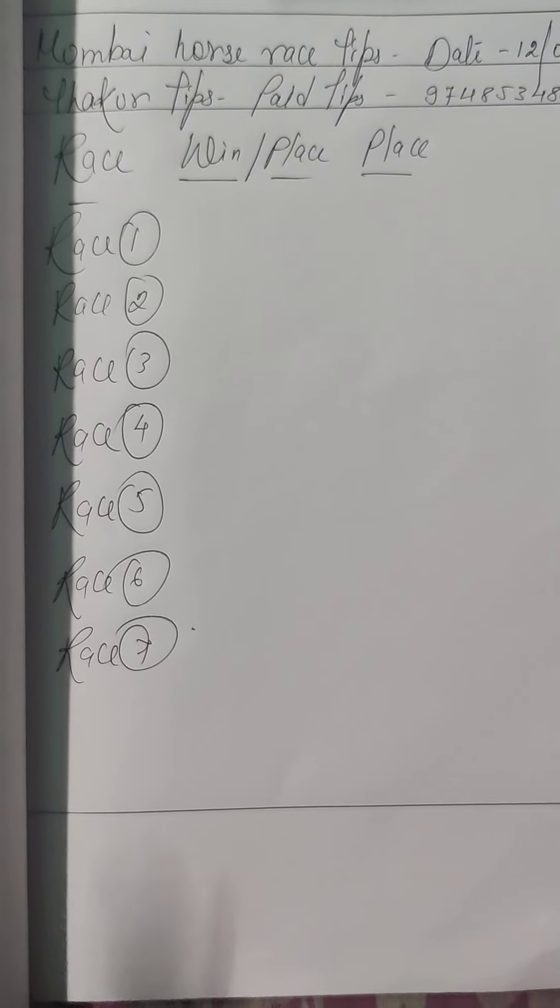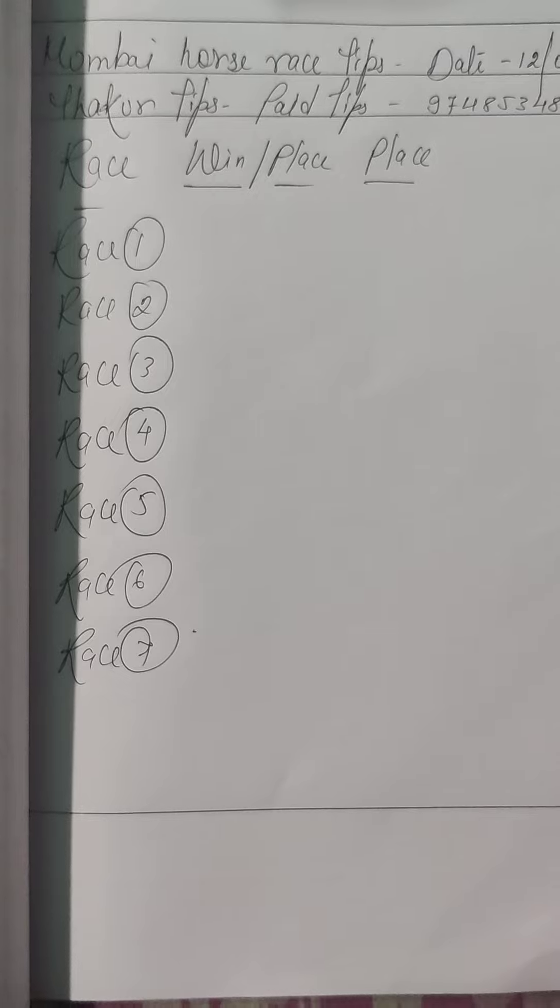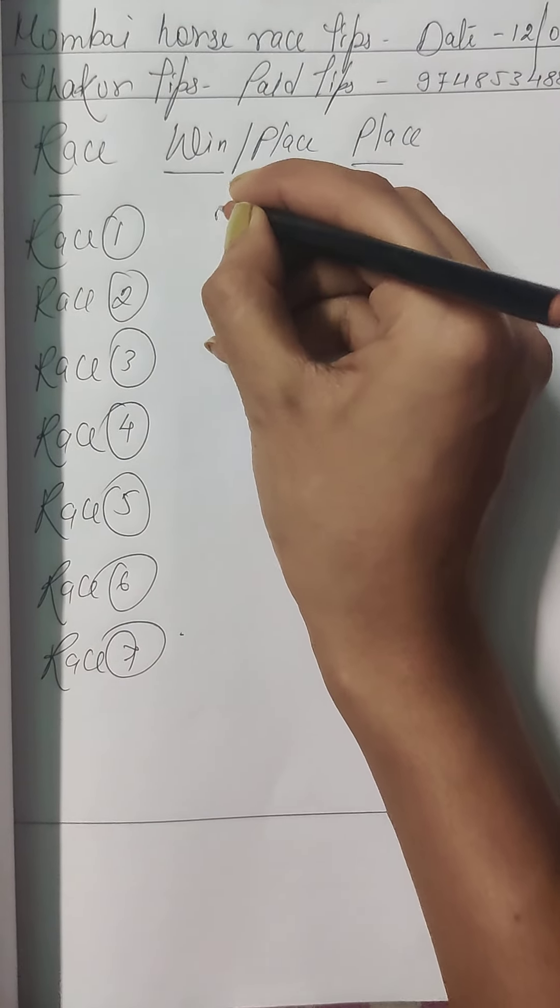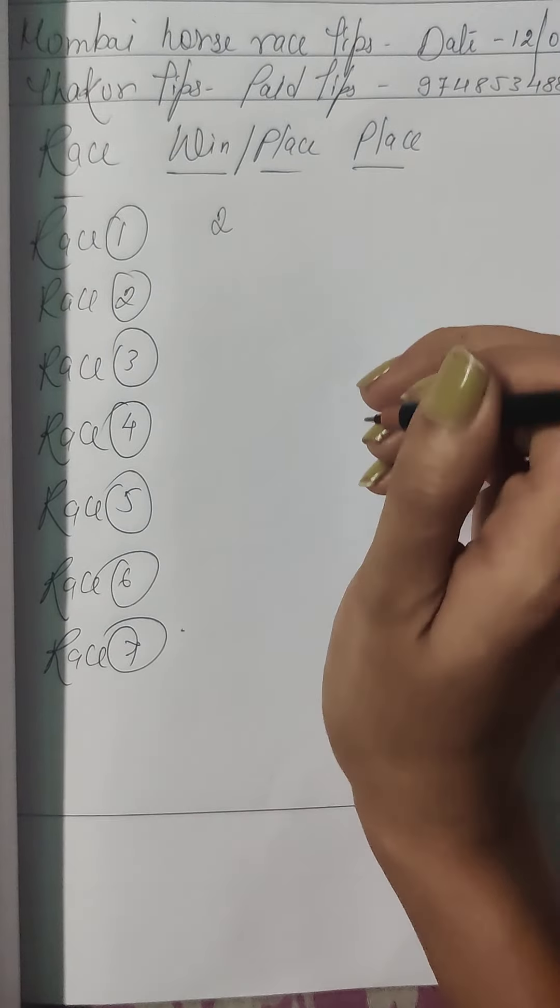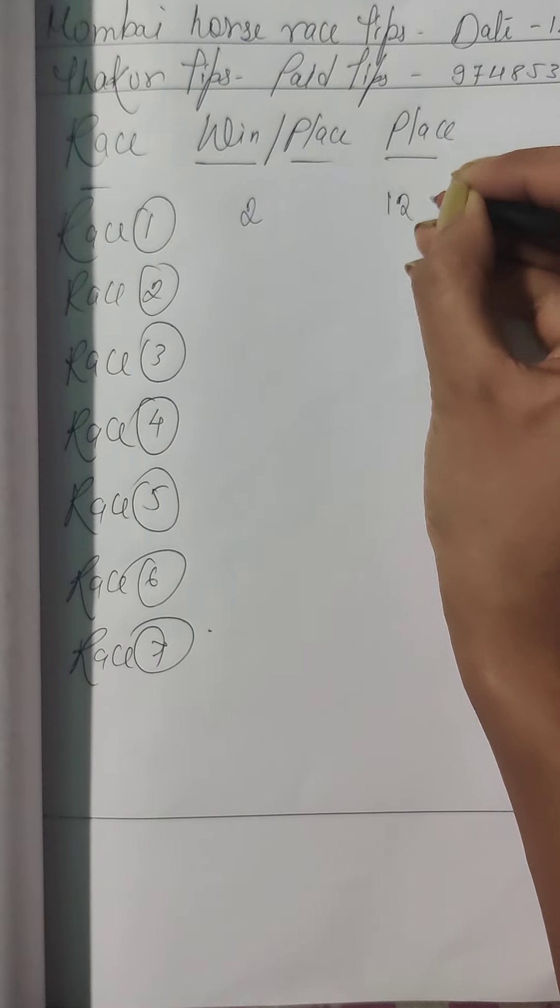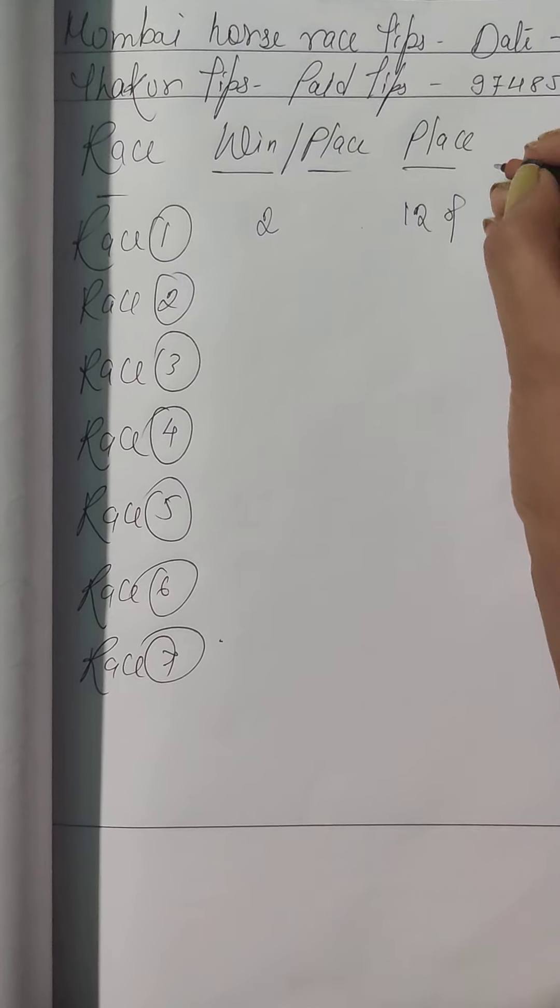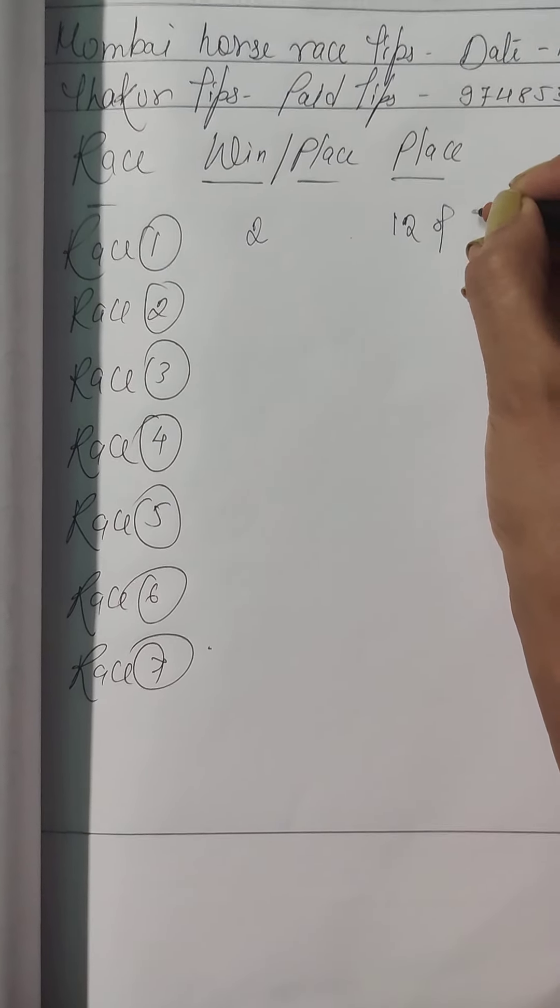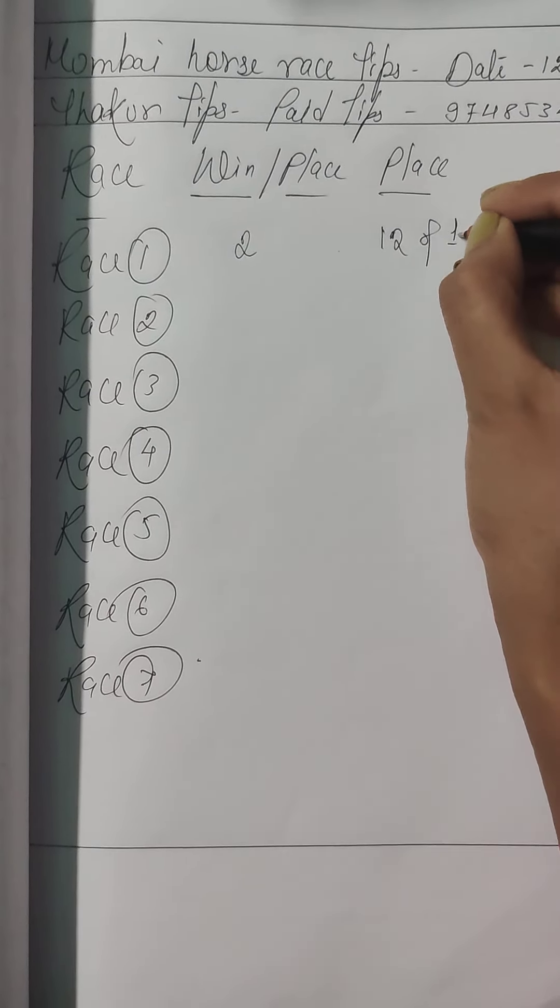In race number 1 my first choice is horse number 2, my second choice is horse number 1, and my third choice is horse number 11.